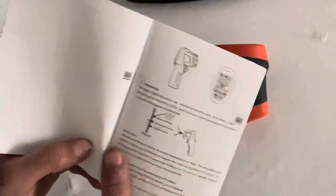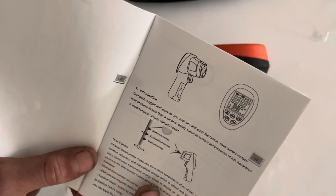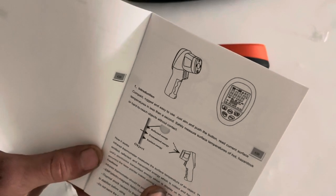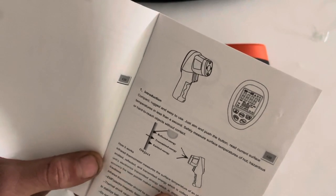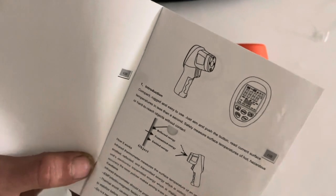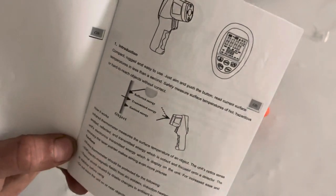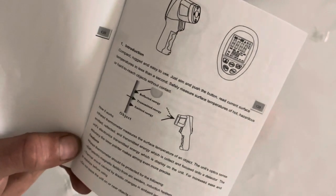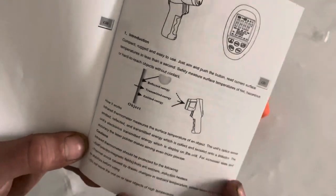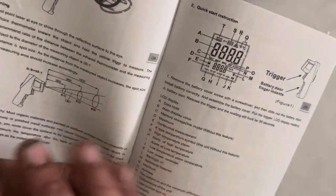Let's go over the simple stuff just so we can figure out how to get the battery in there. Compact, rugged and easy to use, just aim and push the button. Read the current surface temperatures in less than a second. Safely measure surface temperatures of hot, hazardous or hard to reach objects without contact. This is exactly what I need it for.